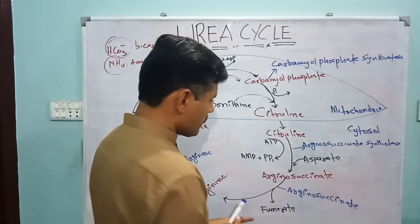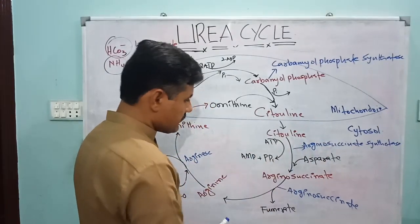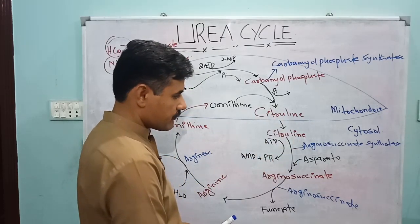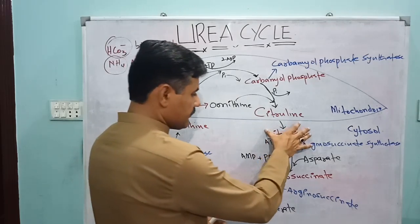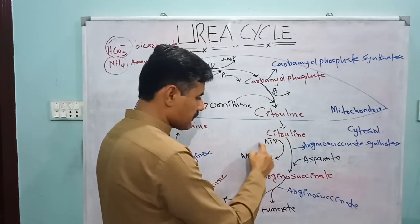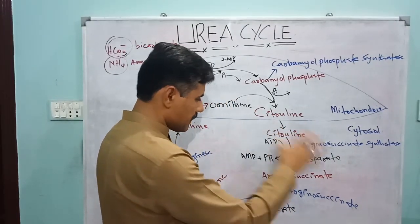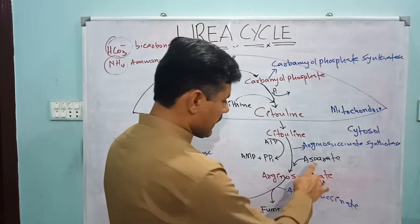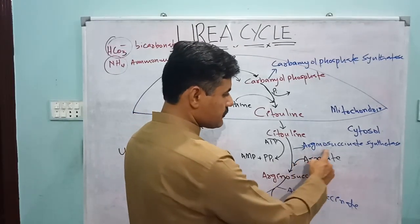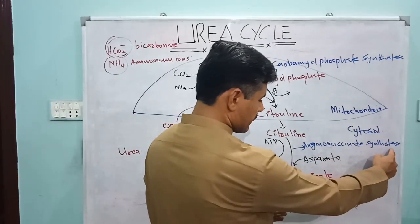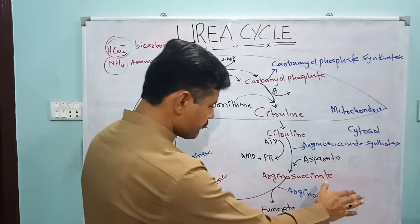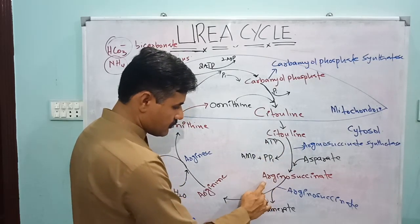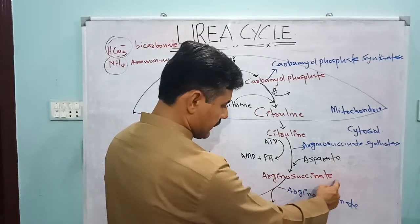Citrulline then moves into the cytoplasm. In the cytosol, citrulline is further converted through different steps. Citrulline consumes one molecule of ATP, which is converted into AMP, and with the help of the enzyme argininosuccinate synthetase, aspartate is added and citrulline is converted into argininosuccinate.